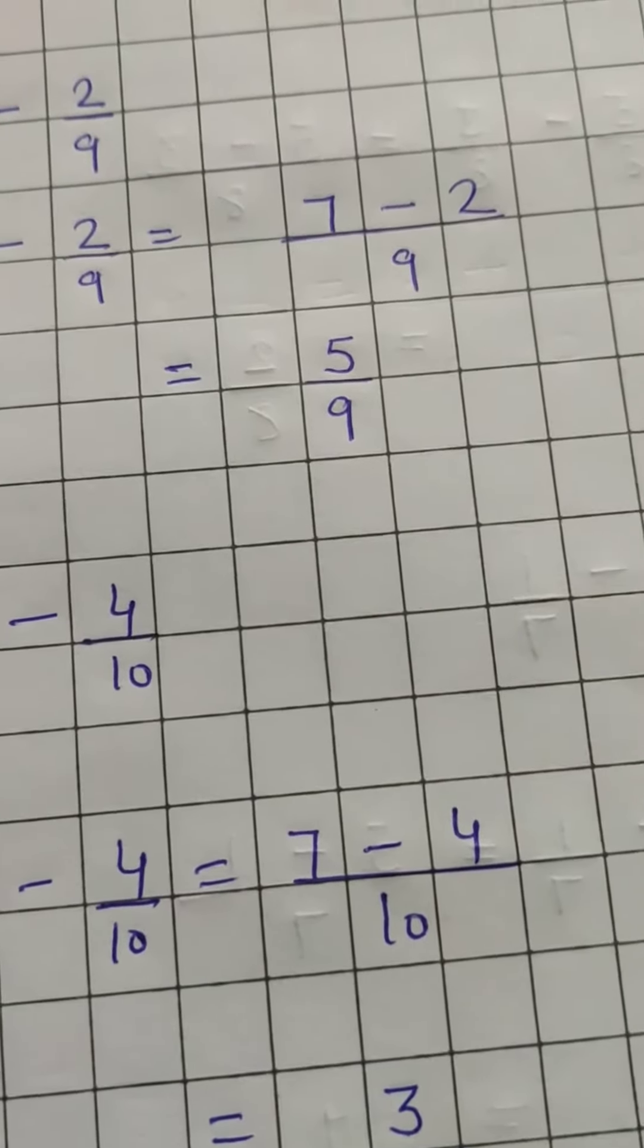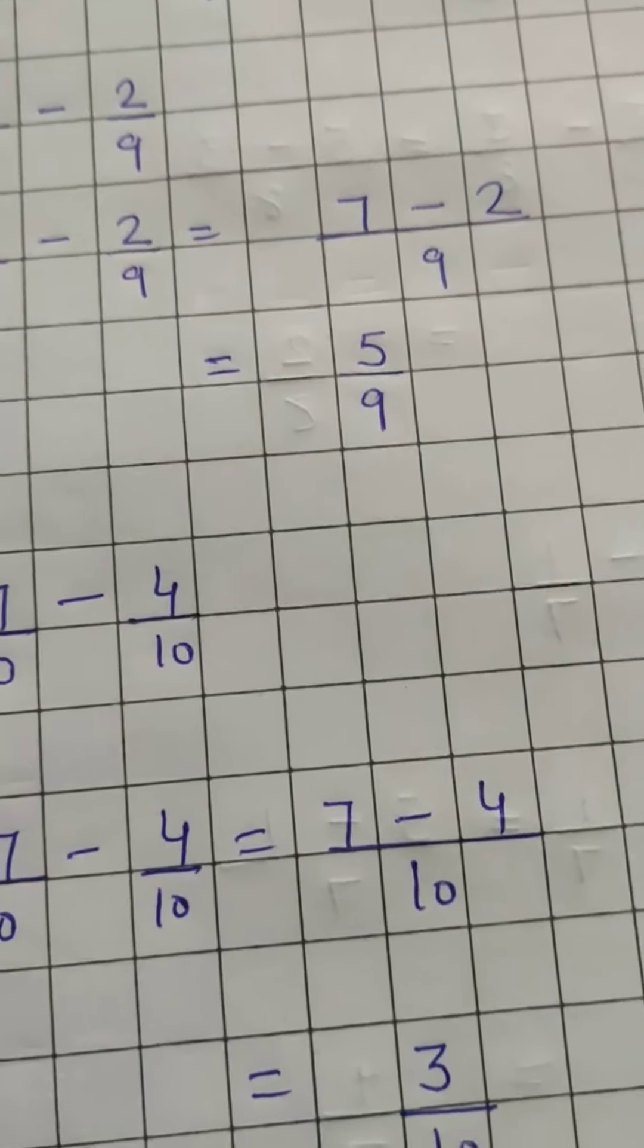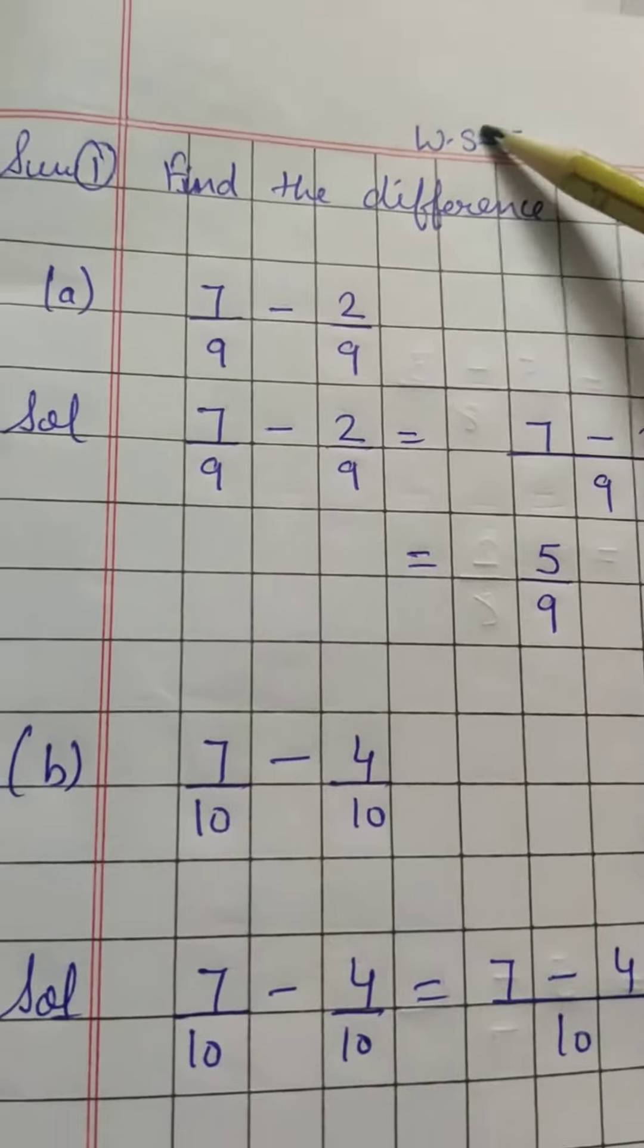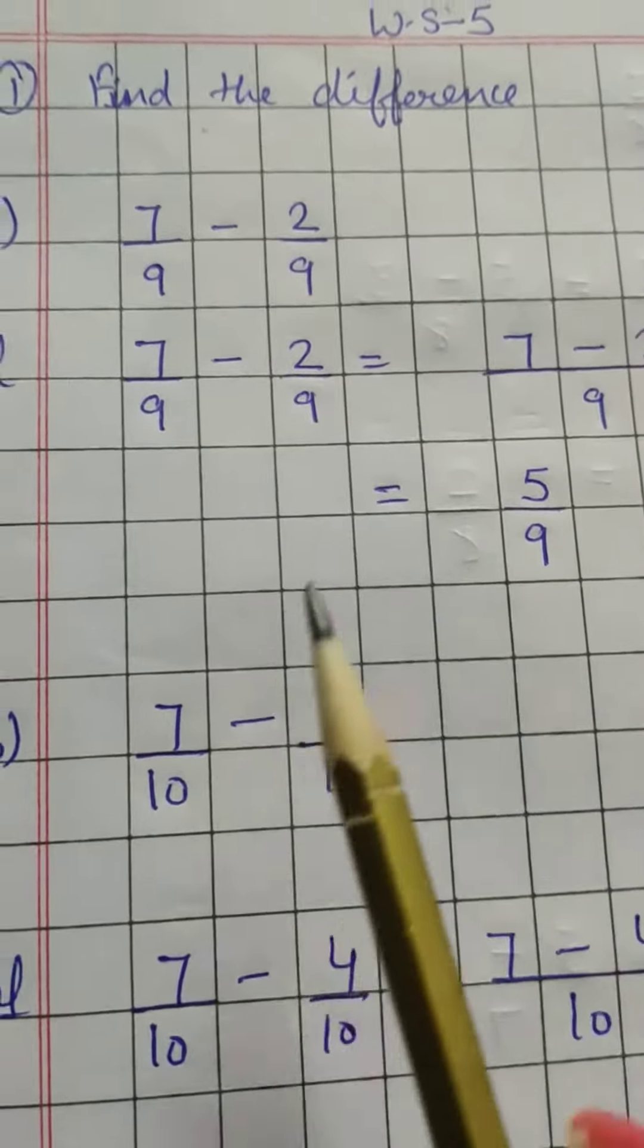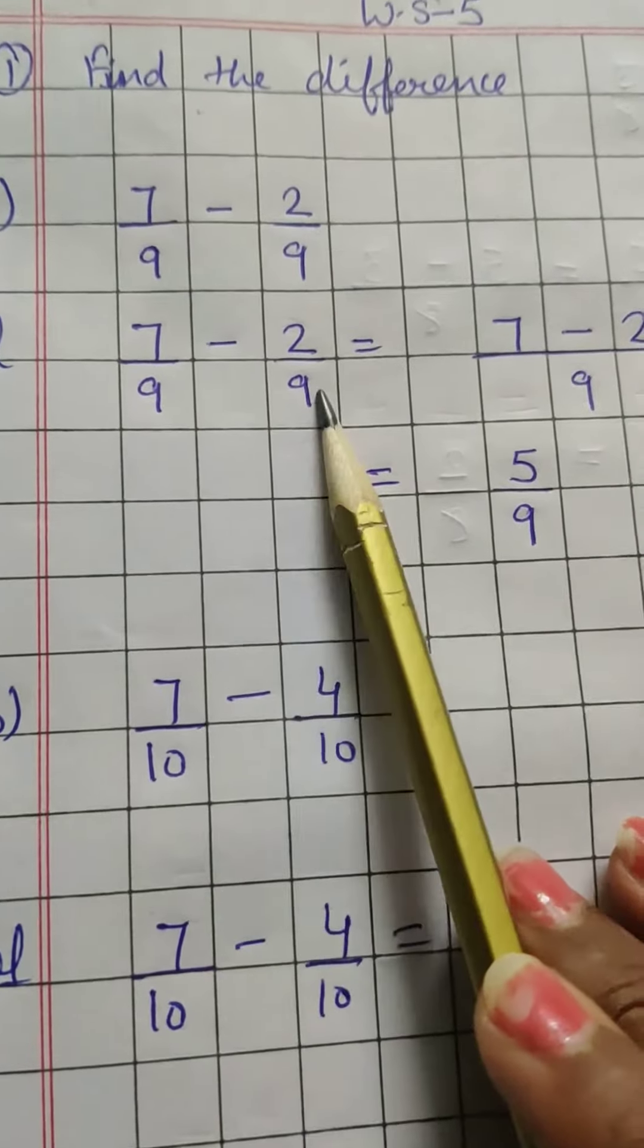So firstly mention the worksheet, start the question, and then part A: seven by nine minus two by nine. Whenever we have the same denominator, the denominator stays as it is.